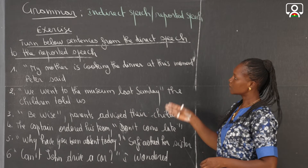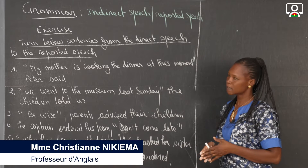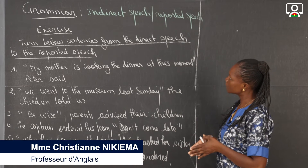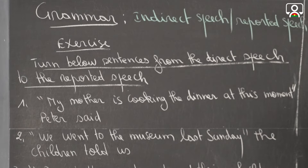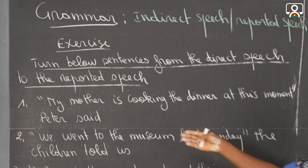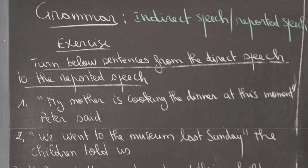This is the exercise on the reported speech, to turn the below sentences from the direct speech to the indirect speech. The first sentence is: 'My mother is cooking the dinner at this moment,' Peter said.